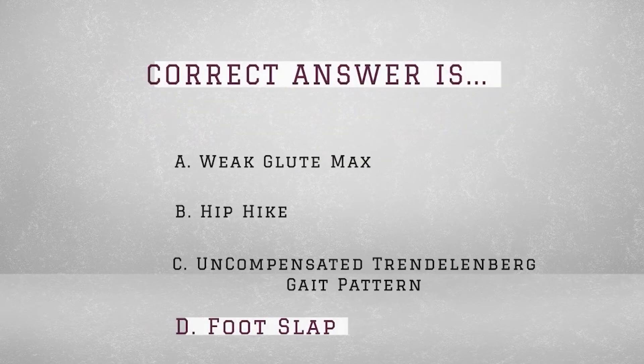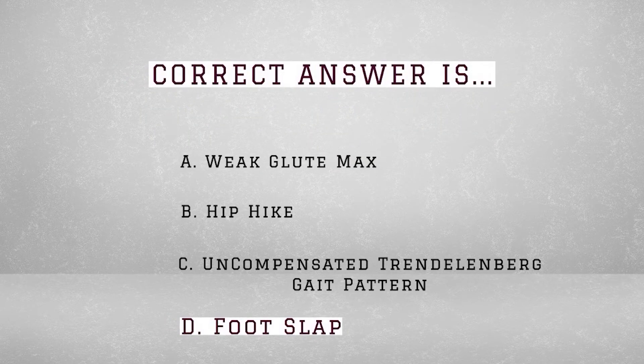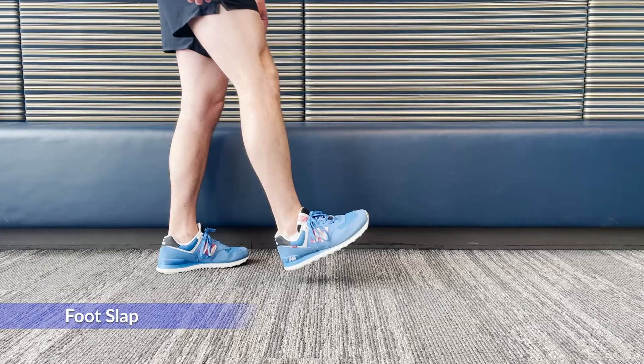The answer is D, foot slap. Damage to the deep peroneal nerve will affect the anterior tibialis, thus reducing its ability to eccentrically control the foot to the ground. Instead, the patient will present with a slapping sound immediately following heel strike.